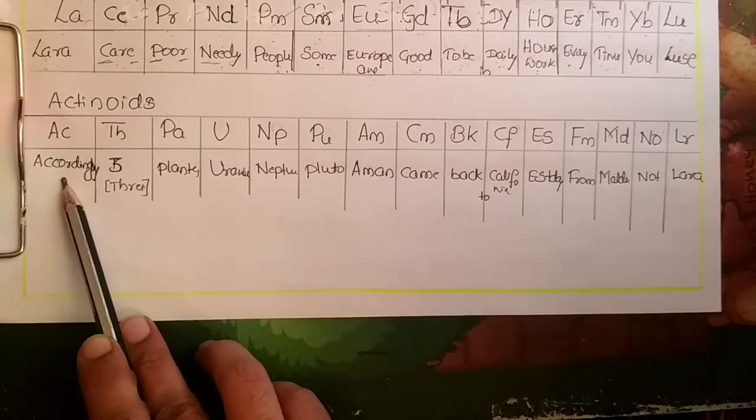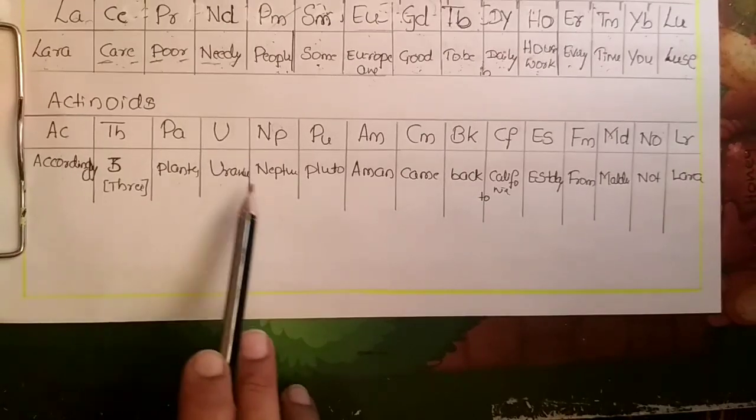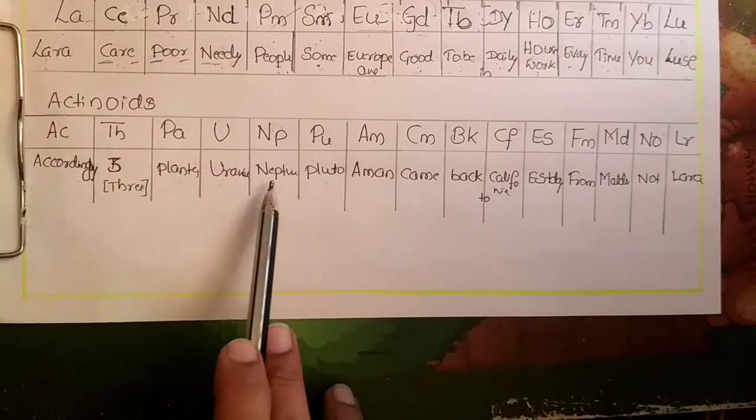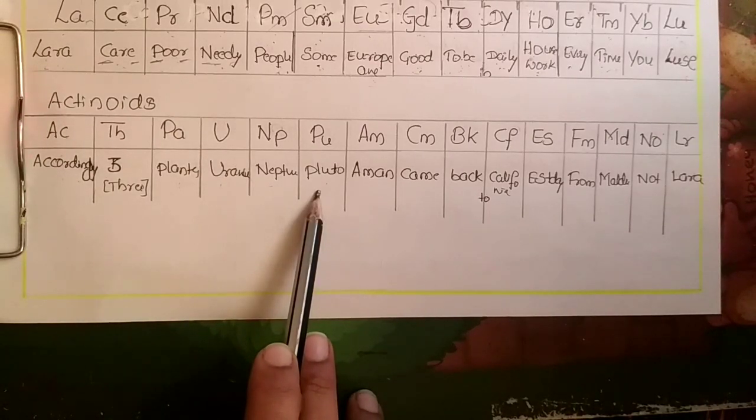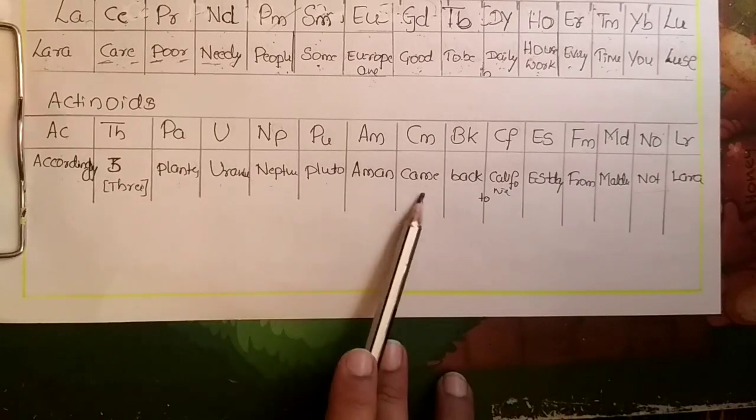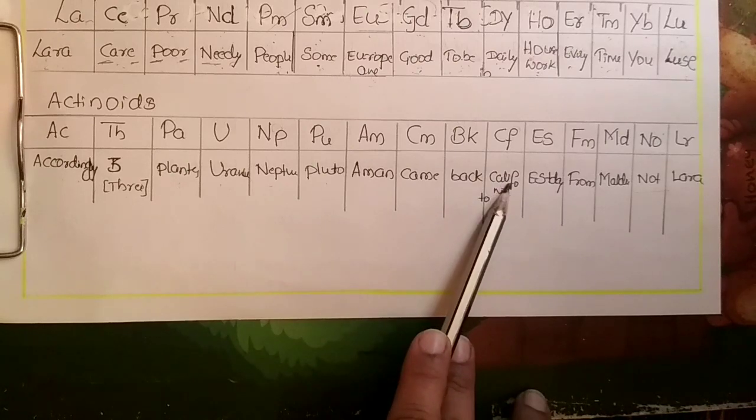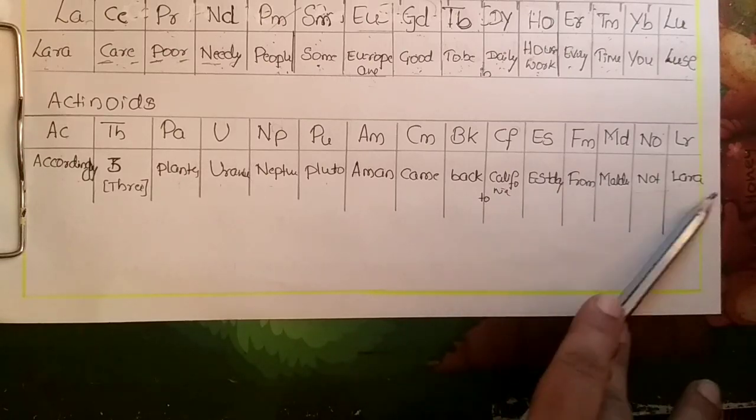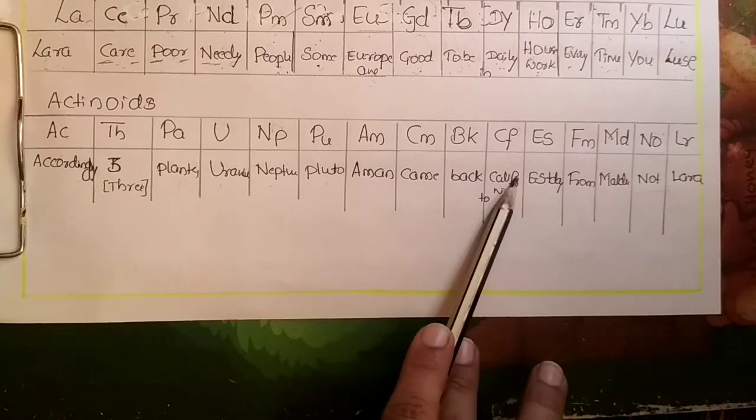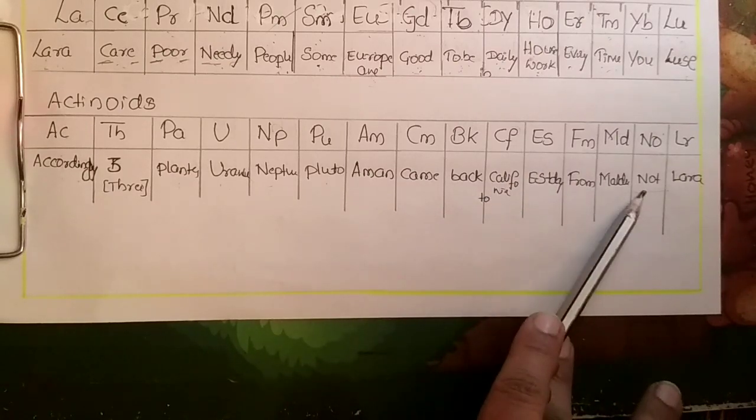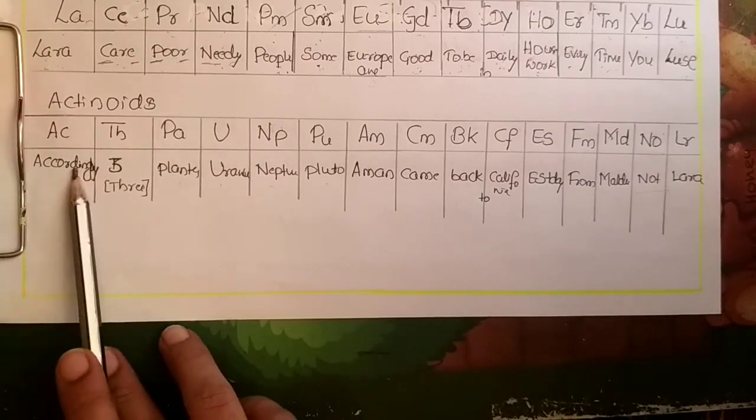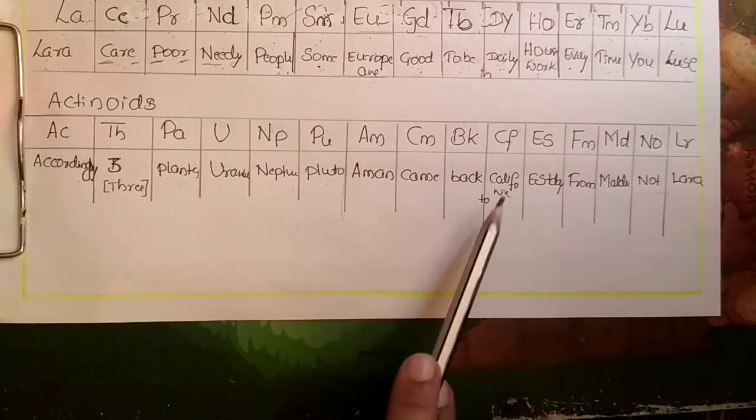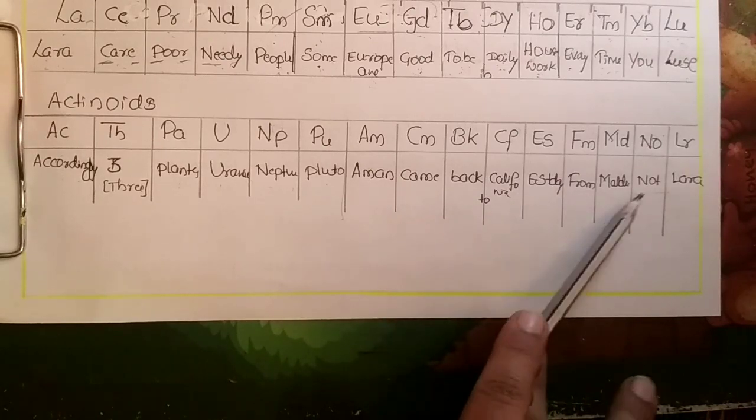Accordingly three planets: Uranus, Neptune, Pluton. And one more sentence: Ammon came back to California yesterday from Maldives, not Lara. Repeating: accordingly three planets Uranus, Neptune, Pluton. Ammon came back to California yesterday from Maldives, not Lara. This is how you need to remember.